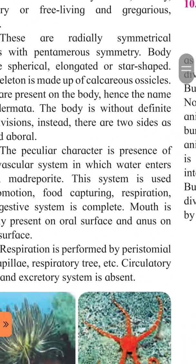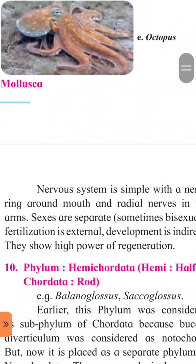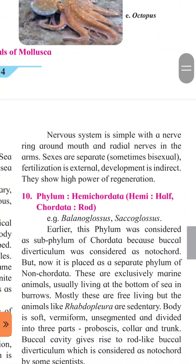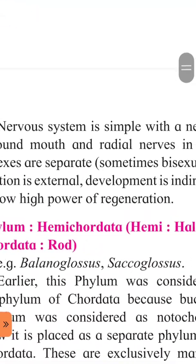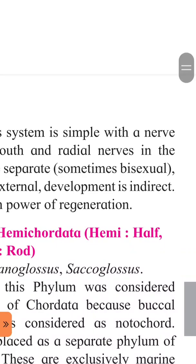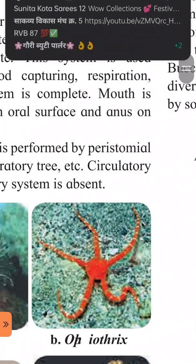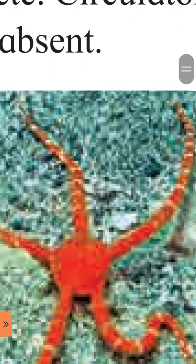Nervous system is simple — in jeevon mein simple nervous system hai. There is a nerve ring around the mouth. Mouth ke around ek nerve ring hai, aur us nerve se radial nerves arise hote hain in the arms. Radial nerves arm mein arise hote hain. Mouth ke paas nerve ring hota hai.